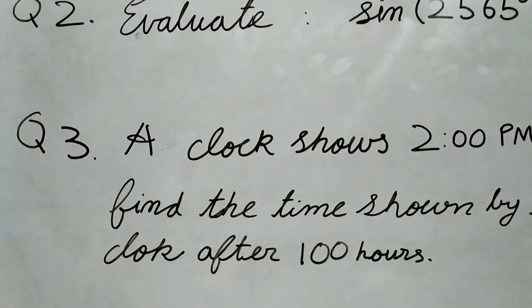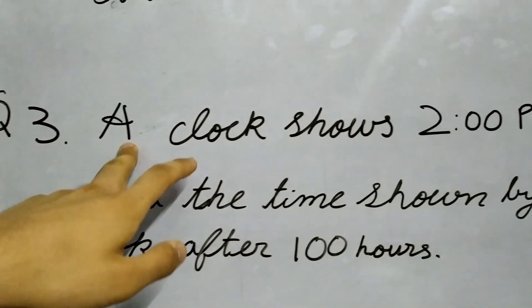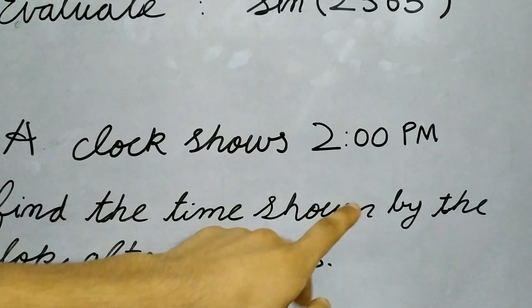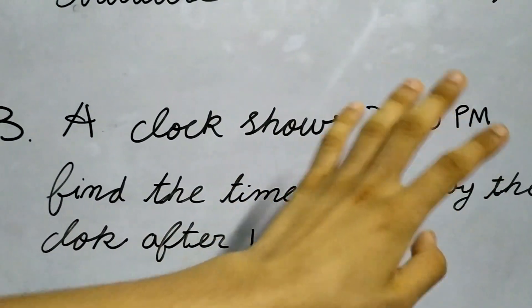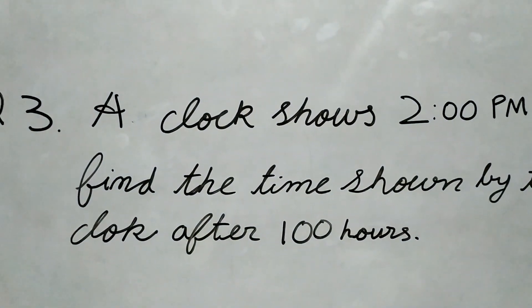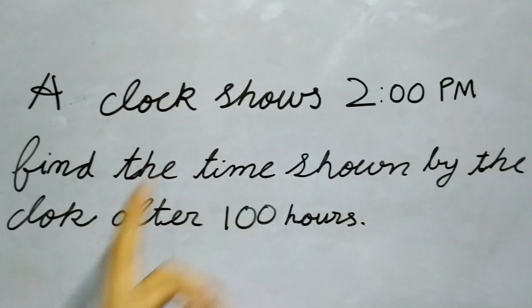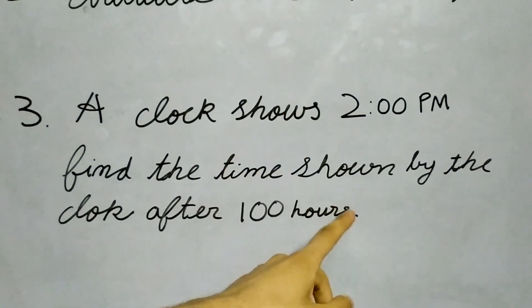The third question, it says that a clock shows 2pm. Everybody is familiar with the clock. And we need to find the time shown by the clock after 100 hours.